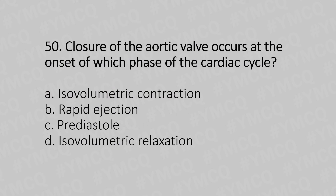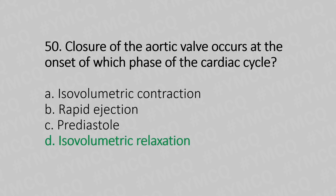Question 50: Closure of the aortic valve occurs at the onset of which phase of the cardiac cycle? Option A: isovolumetric contraction. Option B: rapid ejection. Option C: prediastole. Option D: isovolumetric relaxation. The answer is Option D: isovolumetric relaxation.